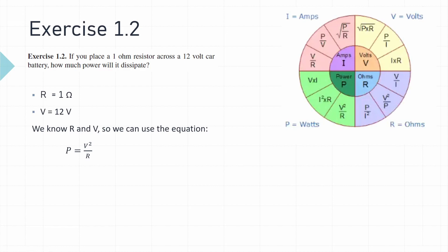This circle of equations is very useful when calculating unknown values from things that you do know. In this case, we know the voltage is 12 volts and we know the resistance is one ohm. We're trying to calculate power, so we can use this equation here, as we know all the variables to calculate what the power dissipation is going to be.